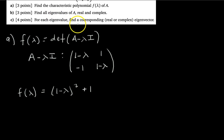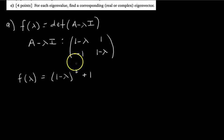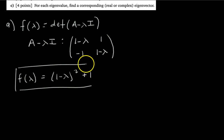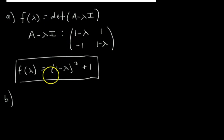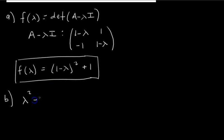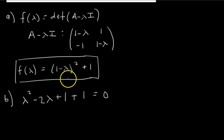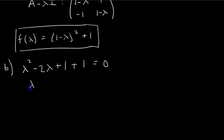But for part B, we have to find the actual eigenvalues of A, so we need to find the roots of this polynomial. We're going to put it in the form A lambda squared plus B lambda plus C so we can use the quadratic formula. So first, we foil: we get lambda squared minus 2 lambda plus 1, and then plus 1 again. We set this equal to 0 to find the roots, which are by definition the eigenvalues. Combining the two 1s: lambda squared minus 2 lambda plus 2 equals 0.